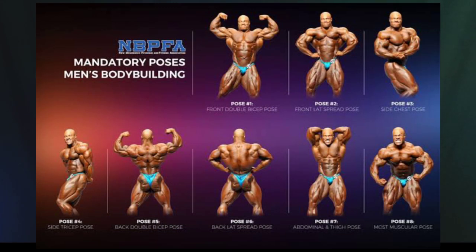In Open Bodybuilding, you can look at the category styles. There are compulsory poses to judge. If you can judge both bodybuilding and the category, you can wear the trunk as well as the master jersey.